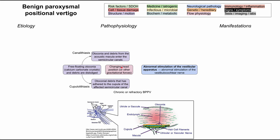In both cases, changing head position or other gravitational forces trigger the problem. In canalolithiasis, the stones deeper in the semicircular canals disrupt endolymph dynamics, causing abnormal stimulation of the vestibular apparatus. In cupulolithiasis, there is increased sensitivity of the semicircular canal because the otoconia are attached directly to the cupula instead of triggering the hair cells. Both are hard to differentiate clinically, but cupulolithiasis may be more implicated in chronic or refractory BPPV.